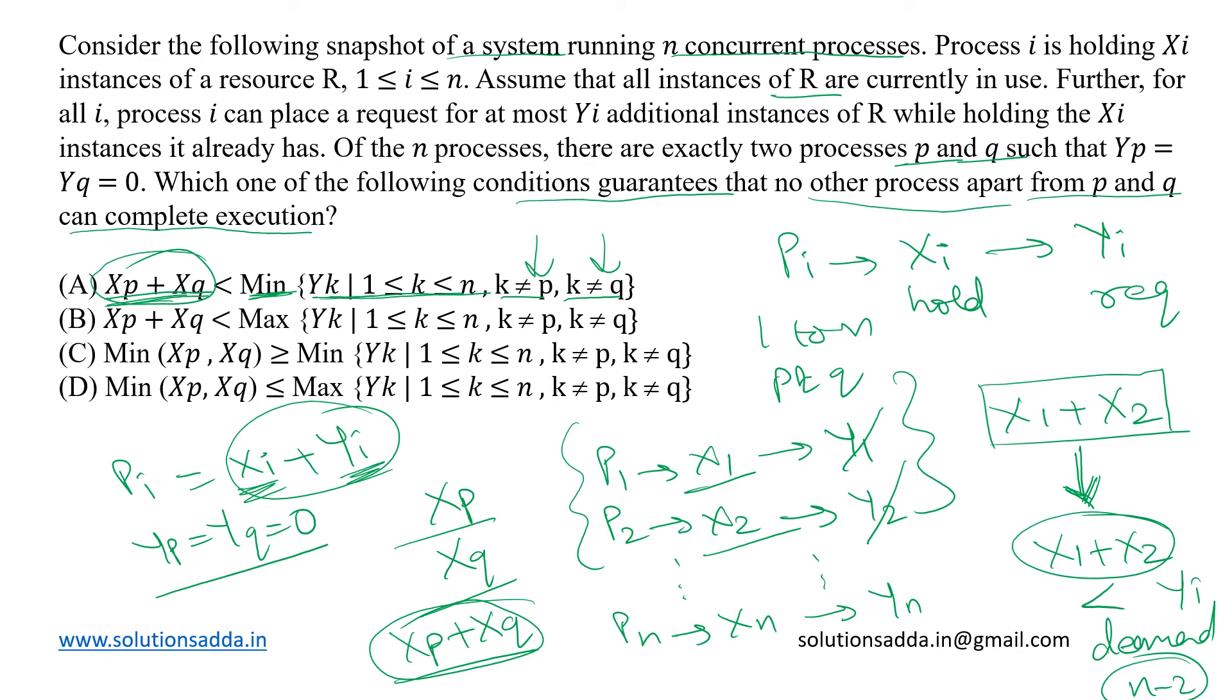With this, none of these N-2 processes will be able to complete its execution and only these two P and Q will be able to complete. So the correct option would be A.